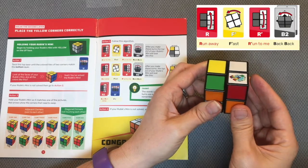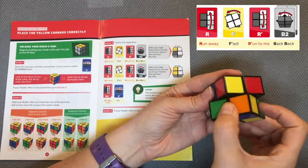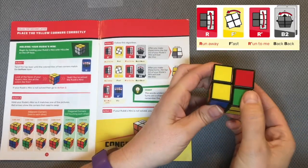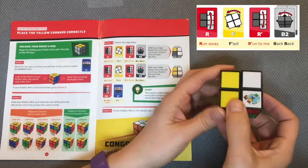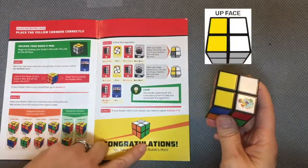Now to line two. Run away, the right side up, fast left, run to me, back back, one, two. Another checkpoint, two yellow tiles and two white tiles.